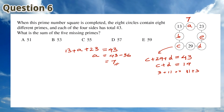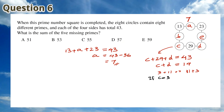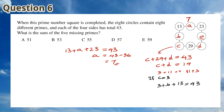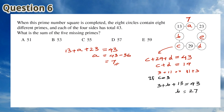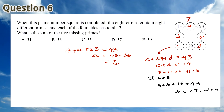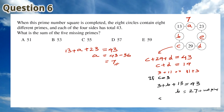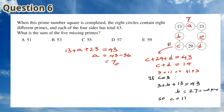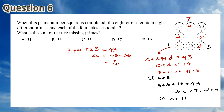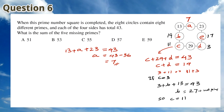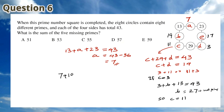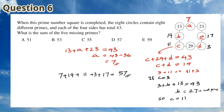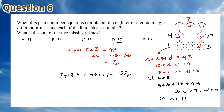Try the possibility if C is 3. This means that 3 plus B plus 13 is 43 and B is 27. However, 27 is not a prime number. This means that C has to be equal to 11. So 7 plus 19 plus 11 plus 3 plus 17 is equal to 57. This means that the answer is D.